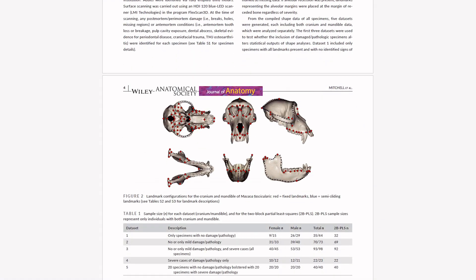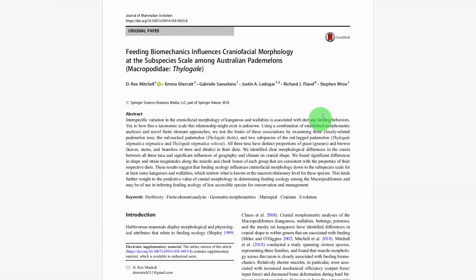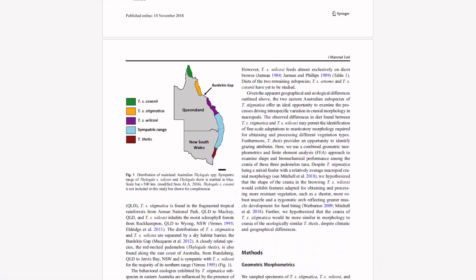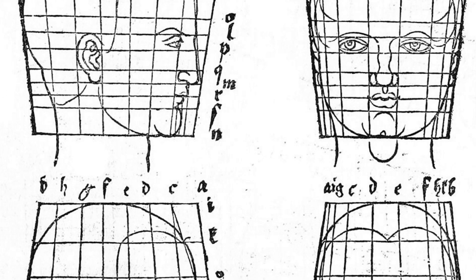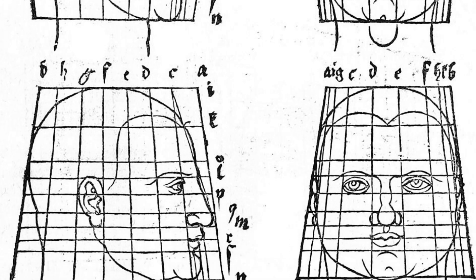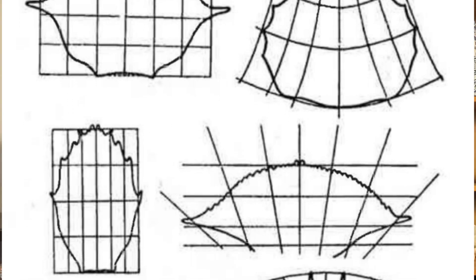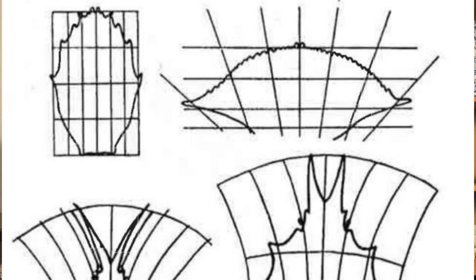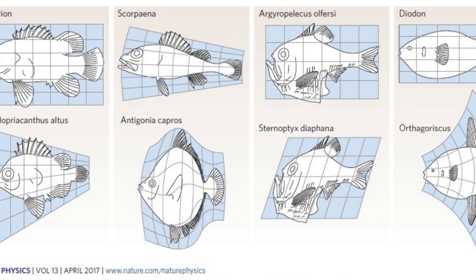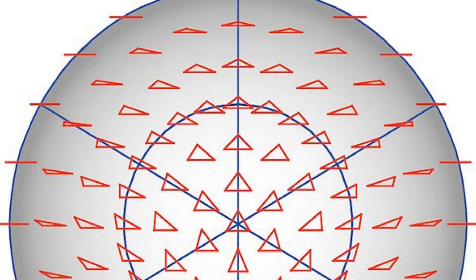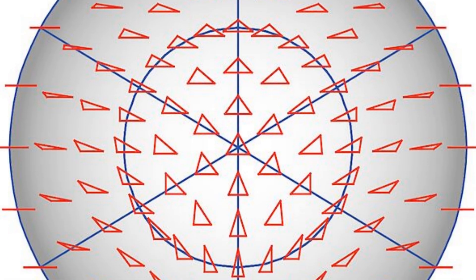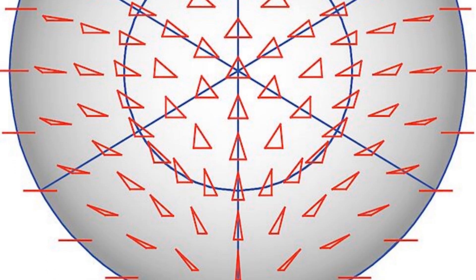I've used this method a ton in my research, sometimes along with finite element analysis, to investigate function, evolution and development of the skull. Studying whole shape differences is nothing new — it dates all the way back to Dürer in the 16th century, and was expanded on massively by D'Arcy Thompson in the early 20th century. His transformation grids, showing how shapes shift across species, are still iconic today. But to scientifically compare shape, we need a mathematical and repeatable way to isolate it, and that's where things get really interesting.